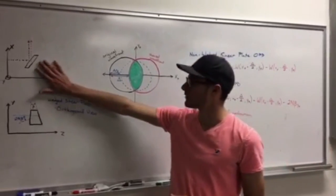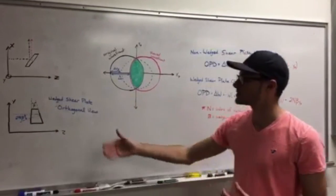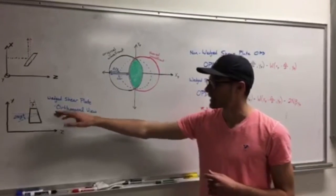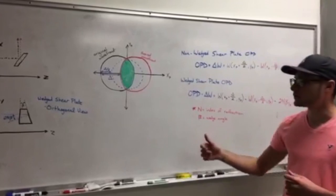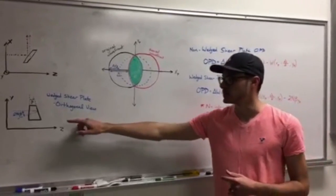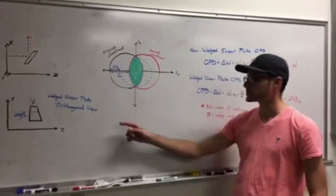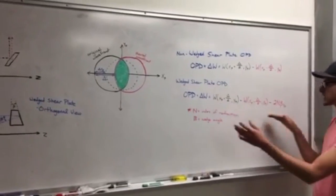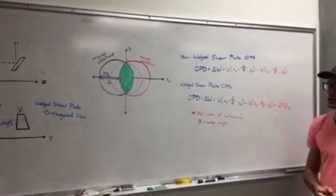The non-wedged shear plate follows this basic form, and when we change it to a wedged shear plate, in the orthogonal direction, there is a beta wedge angle shift, which causes a 2 times the index of refraction times the wedge angle shift in the wavefront, which contributes to this extra amount of shear in the OPD.